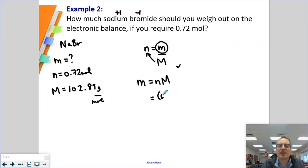We're going to sub in 0.72 moles times by 102.89 grams per mole. Moles are going to cancel.